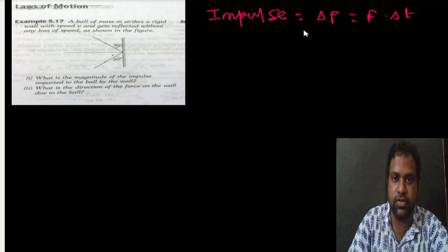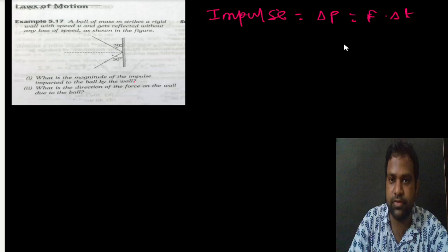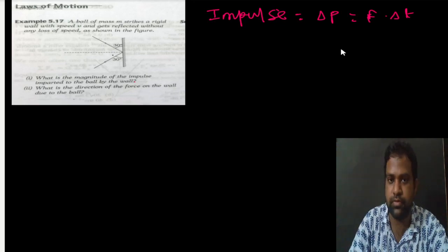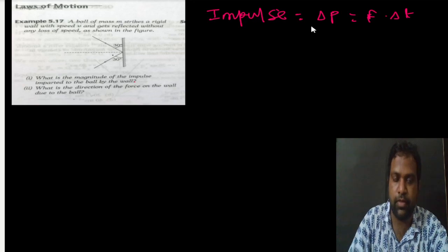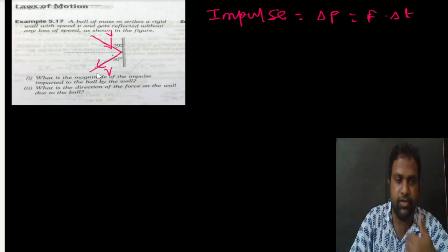So the first question is: what is the magnitude of impulse imparted to the ball by the wall? The velocity is V, and after reflection it comes back with the same velocity — it is reflected with the same speed.